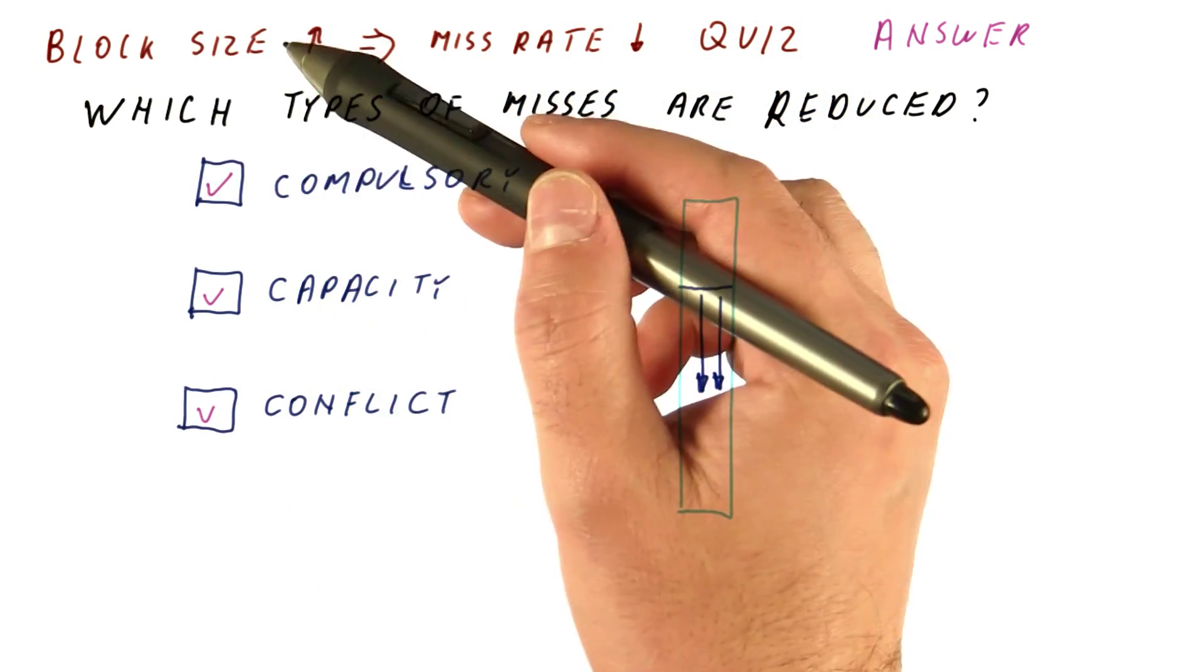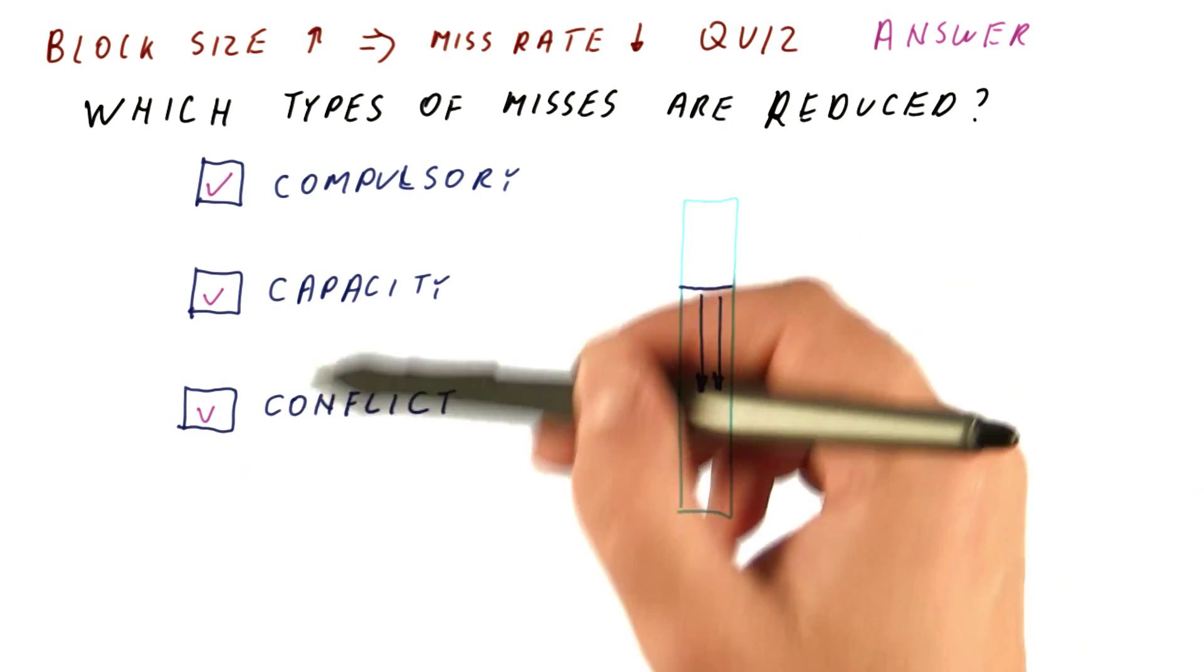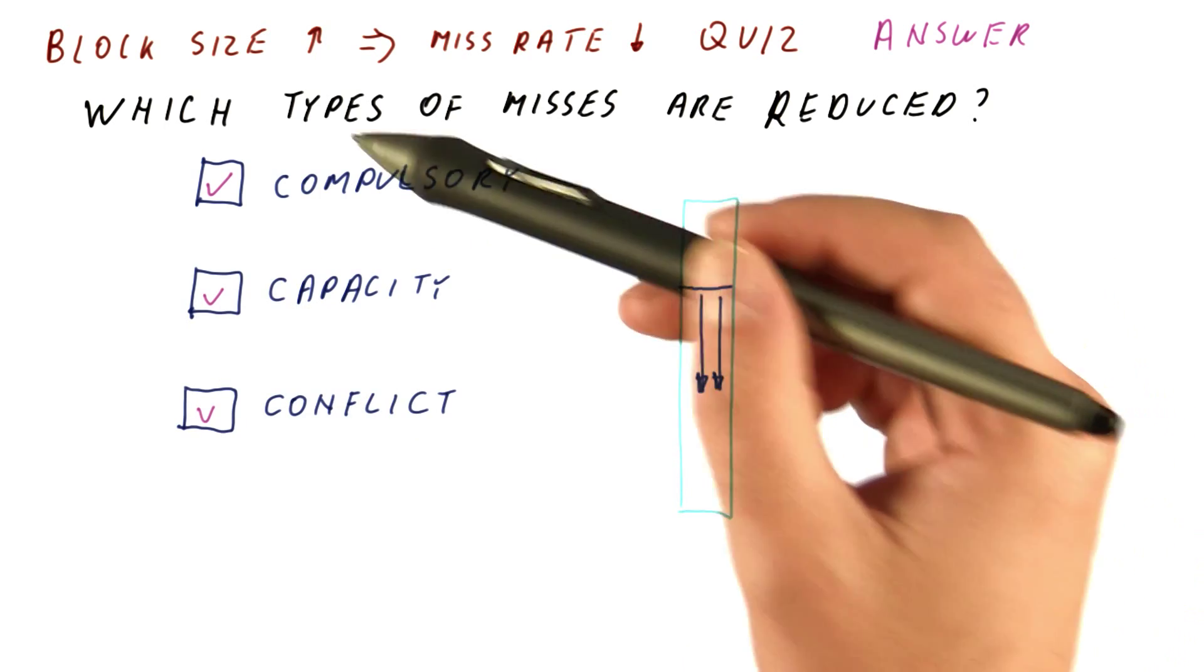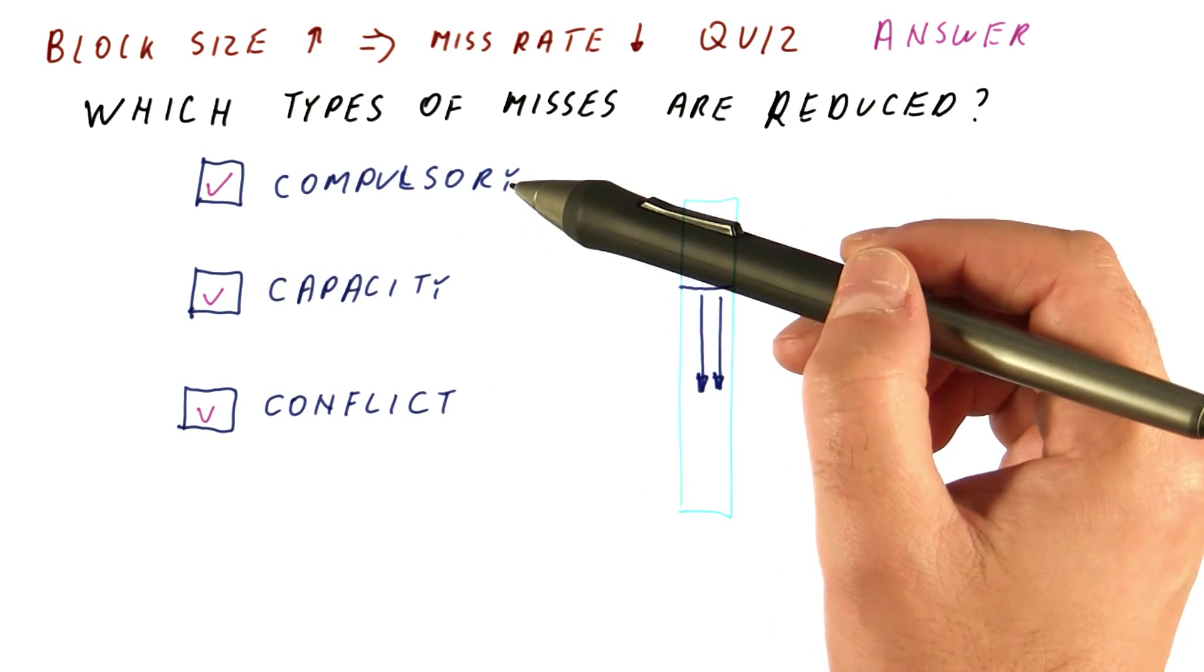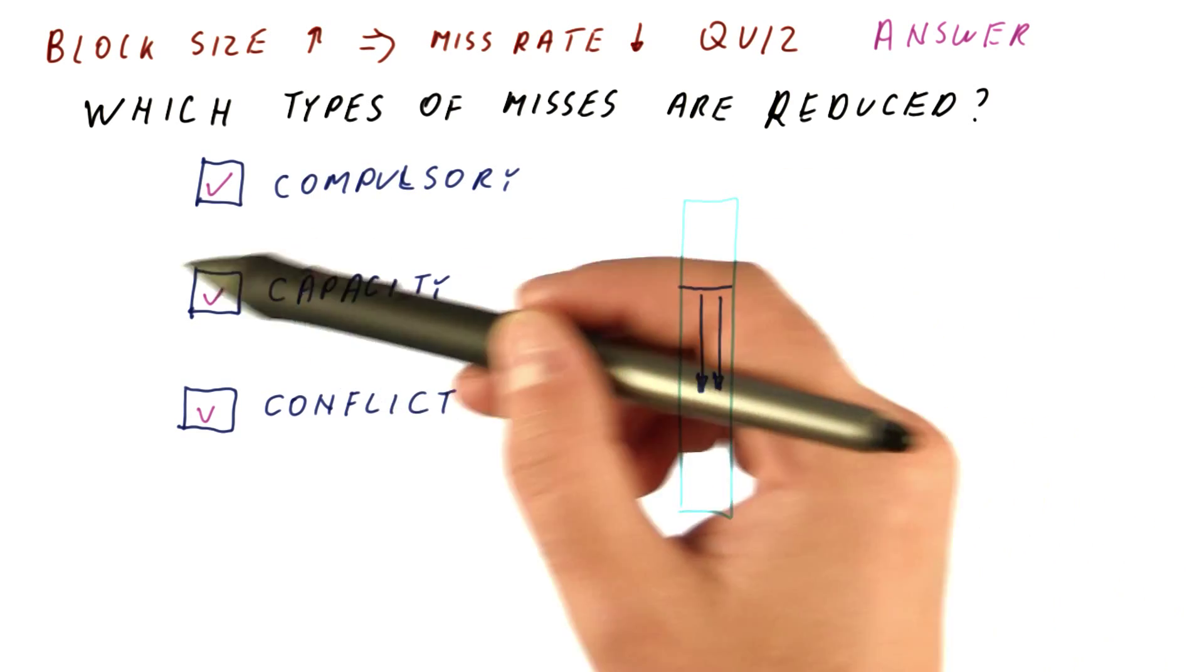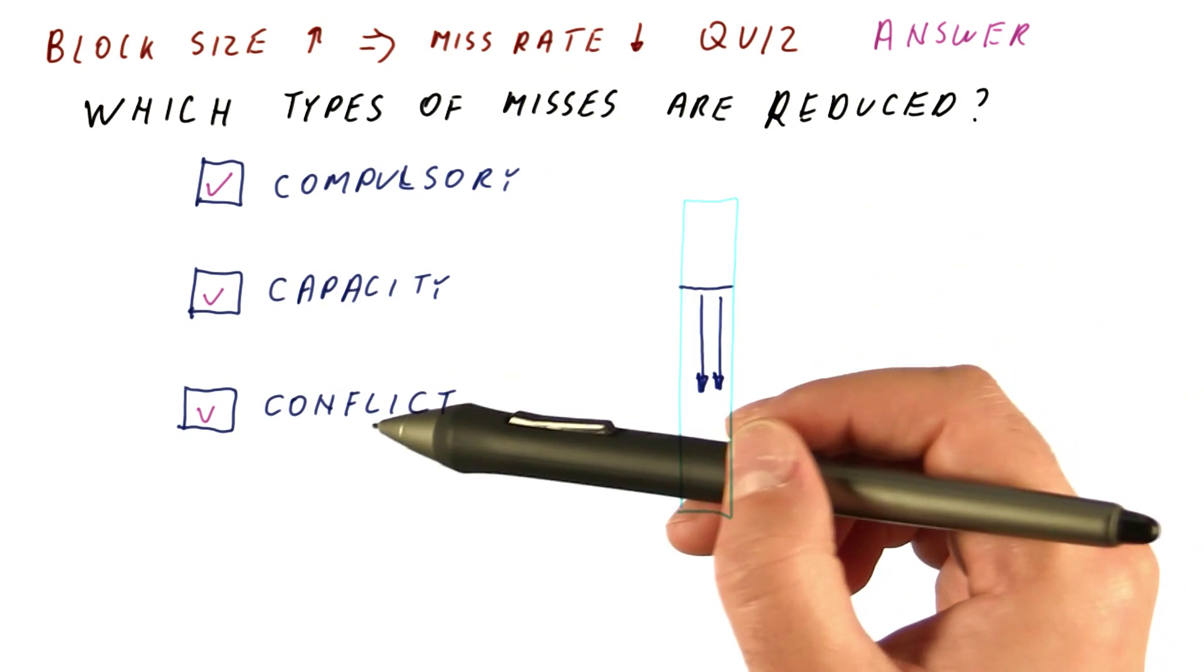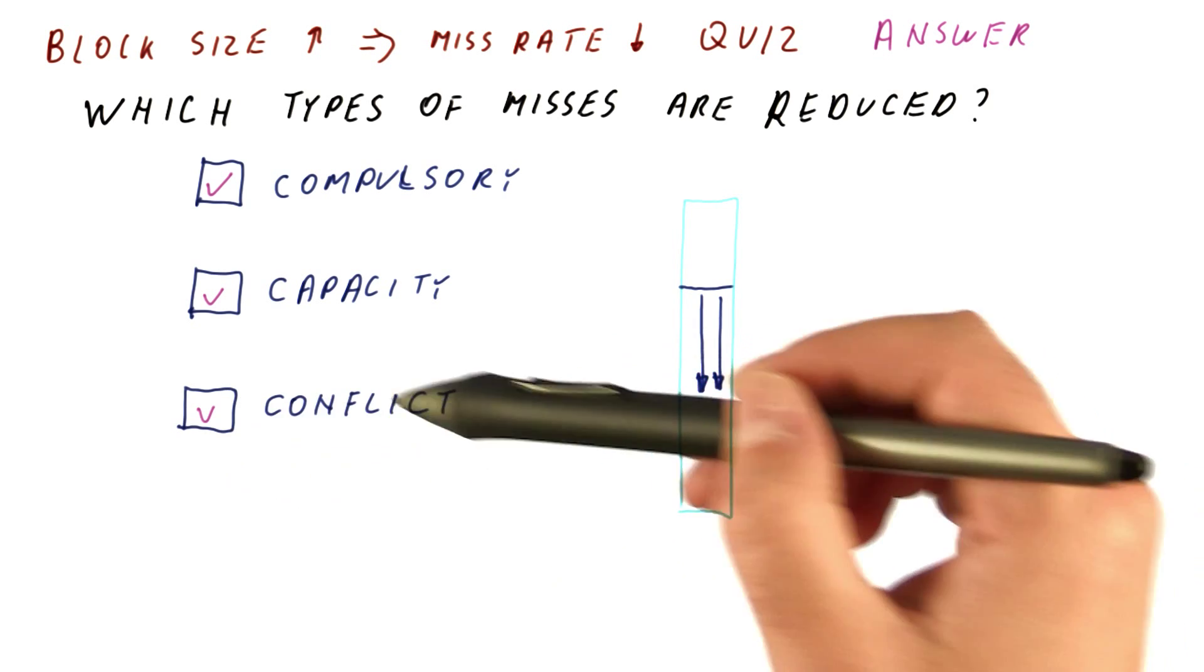So the increase in block size can improve all types of misses. That is, it can reduce the number for all three types of misses. When we increase the block size, the compulsory misses are almost always going to go down. The capacity misses are going to go down as long as there is enough locality. And the conflict misses are likely to stay similar but might go down.